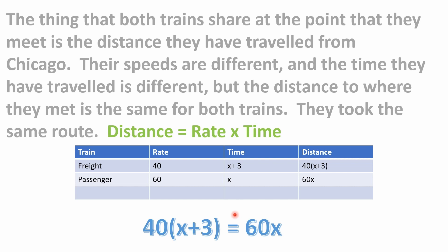For the freight train: rate 40 miles per hour times time (x + 3) gives the expression 40(x + 3) for distance. For the passenger train: rate 60 miles per hour times time x gives 60x for distance. We don't know the actual distance yet — just these expressions. But since both trains have traveled the same distance from Chicago, we set the two expressions equal to each other: 40(x + 3) = 60x.